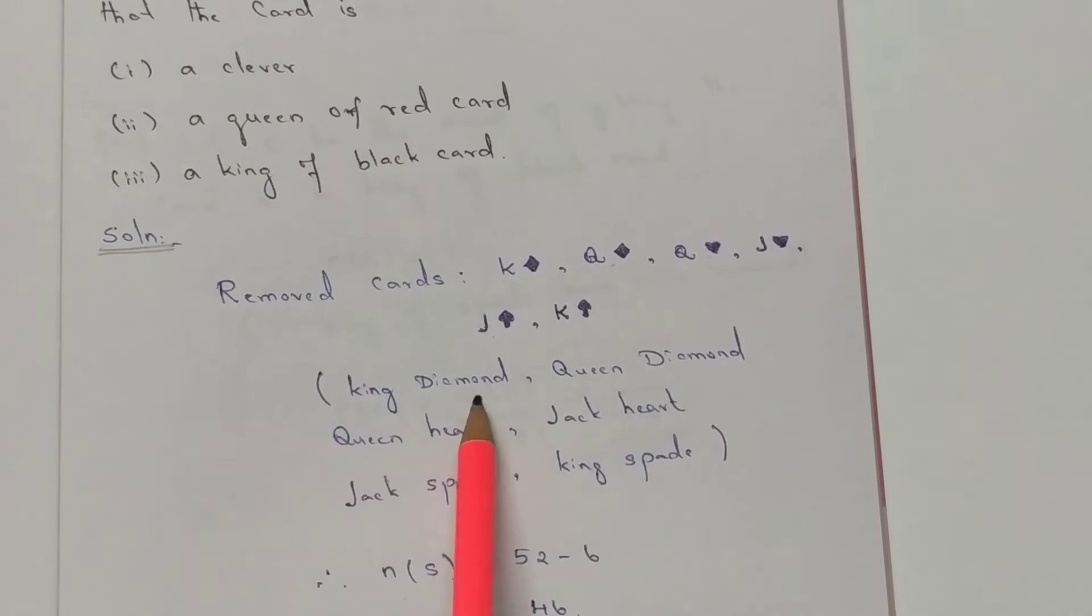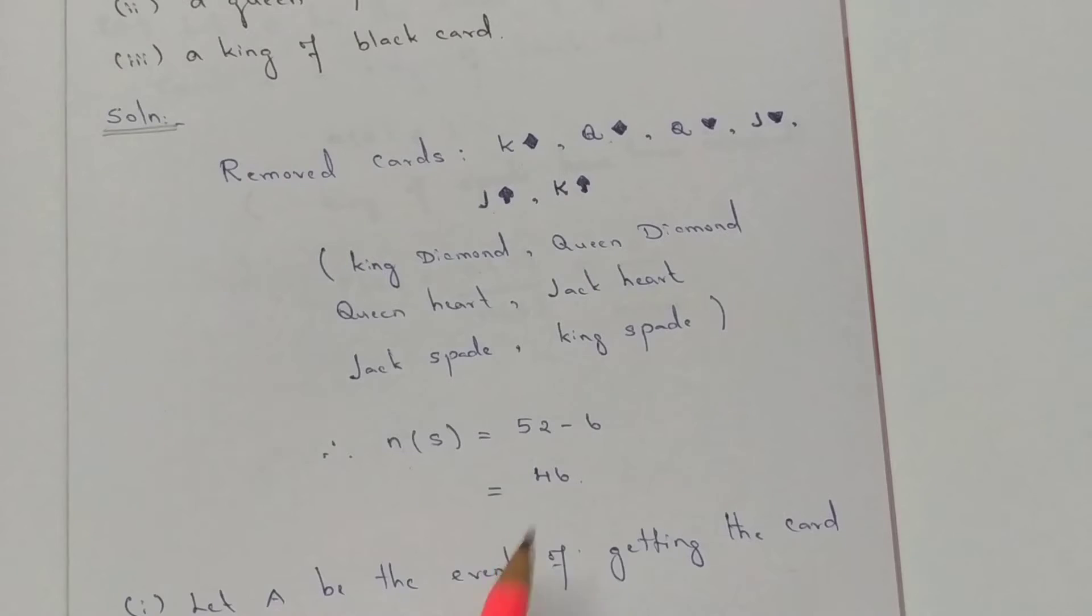That is: King Diamond, Queen Diamond, Queen Heart, Jack Heart, Jack Spade, King Spade. From 52 cards, 6 cards are removed, meaning 46. So there are 46 cards remaining.